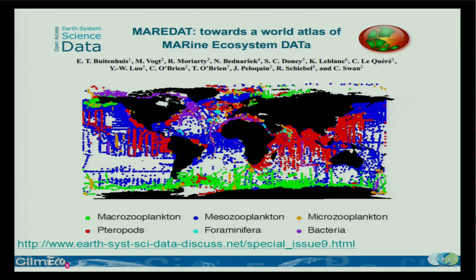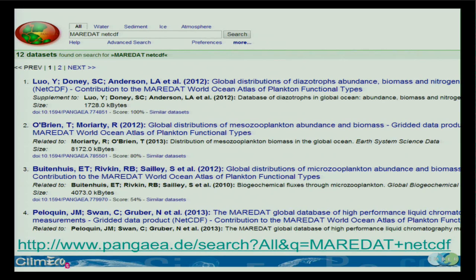So that's available online. It's published as a special issue — a joint special issue between Earth System Science Data, which is a data journal you should visit to find out about new data products being published, and Pangea. The journal doesn't host the data sets, so they need data archives. If you go to Pangea, you find the 12 data sets — NetCDF files for each of the groups.